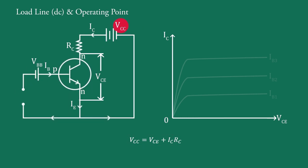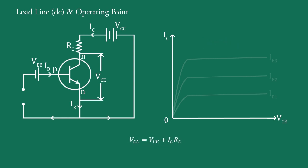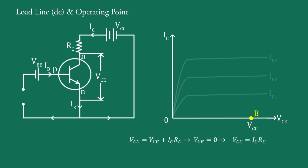In this circuit, VCC and RC are constants, while VCE and IC are variables. To draw the load line we need two endpoints of this straight line. When IC equals 0, then VCC equals VCE, giving us a point on the VCE axis as point B, where VCE equals VCC and IC equals 0.